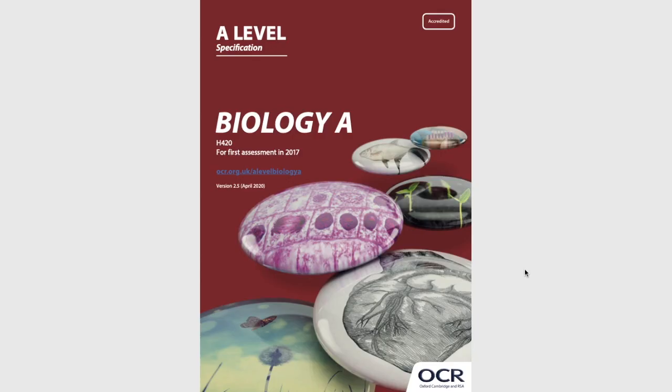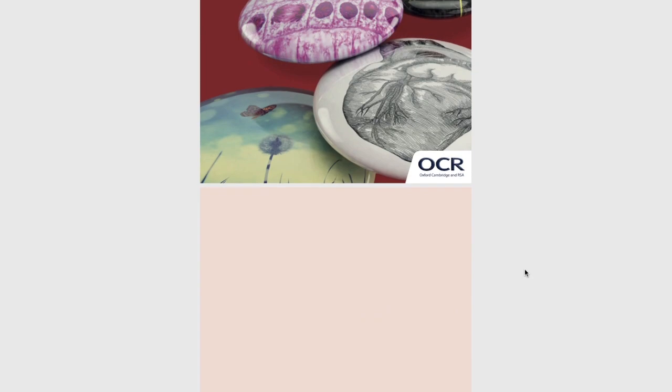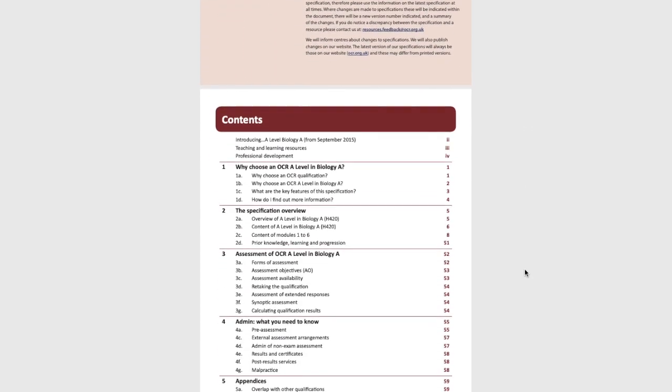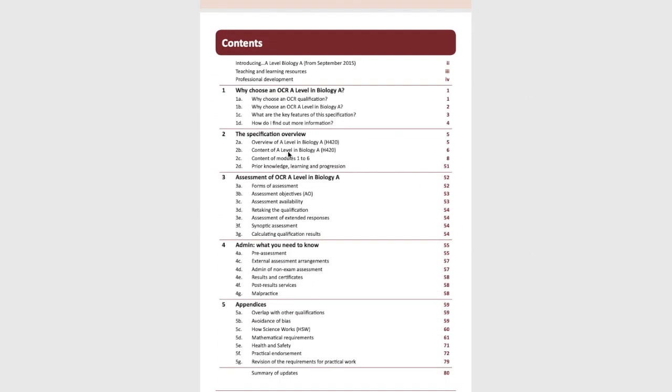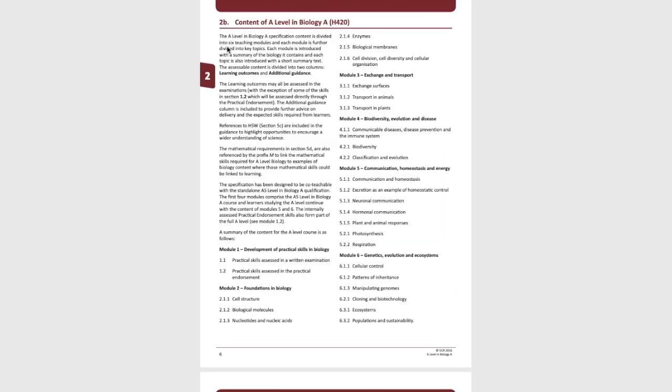The A-level specification document is a piece of information released by all exam boards in the UK to inform students and teachers of everything that will be covered in the exam. For example, the OCR A-level biology specification document will list out exactly what will be taught and covered in exams, from cell biology to ecology — every topic is listed and broken down by exactly what you need to know.